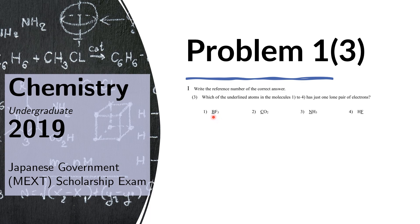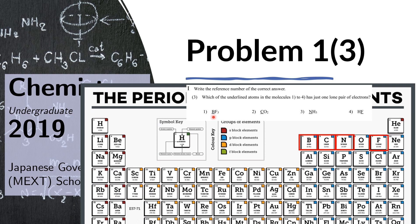Let's look up the periodic table to help us remember the number of valence electrons. Boron has three valence electrons because it is in group 3. Those three electrons are all bonding with the fluorine atoms, so boron is left with no lone pairs — there are no remaining valence electrons.